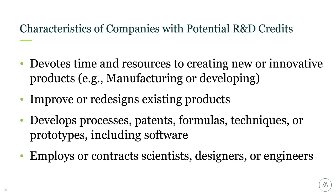Characteristics of companies with potential R&D credits generally include that the company is devoting time and resources to development of new products, improving or redesigning existing products, or developing processes, patents, formulas, techniques, prototypes — either new or improved. Many companies are engaging in incremental improvements to their processes through continuous improvement programs, and this also includes software development to some extent. Another indicator is whether the company employs or contracts scientists, designers, or engineers — those are strong indicators that a company is engaging in R&D activities.